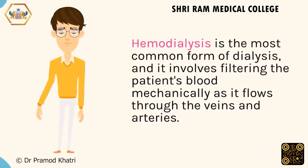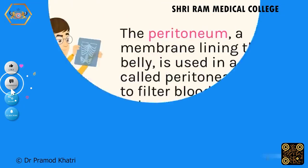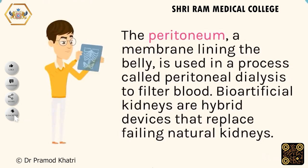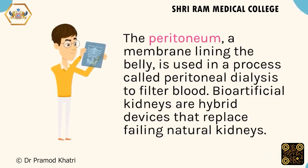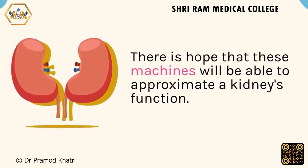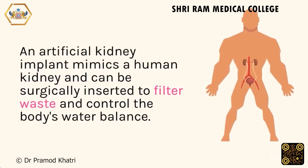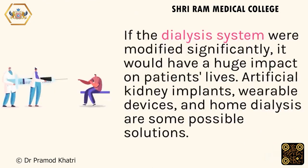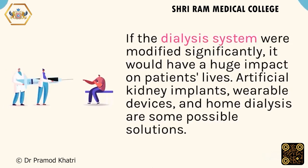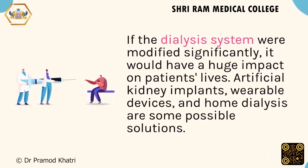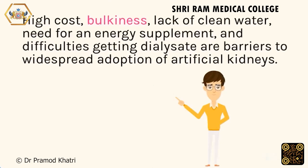Hemodialysis is the most common form of dialysis, involving filtering the patient's blood mechanically as it flows through the veins and arteries. In peritoneal dialysis, the peritoneum — a membrane lining the belly — is used to filter blood. Bioartificial kidneys are hybrid devices that replace failing natural kidneys. An artificial kidney implant mimics a human kidney and can be surgically inserted to filter waste and control the body's water balance. Wearable devices and home dialysis are among the possible solutions, though high cost, bulkiness, lack of clean water, energy requirements, and dialysate availability remain barriers.